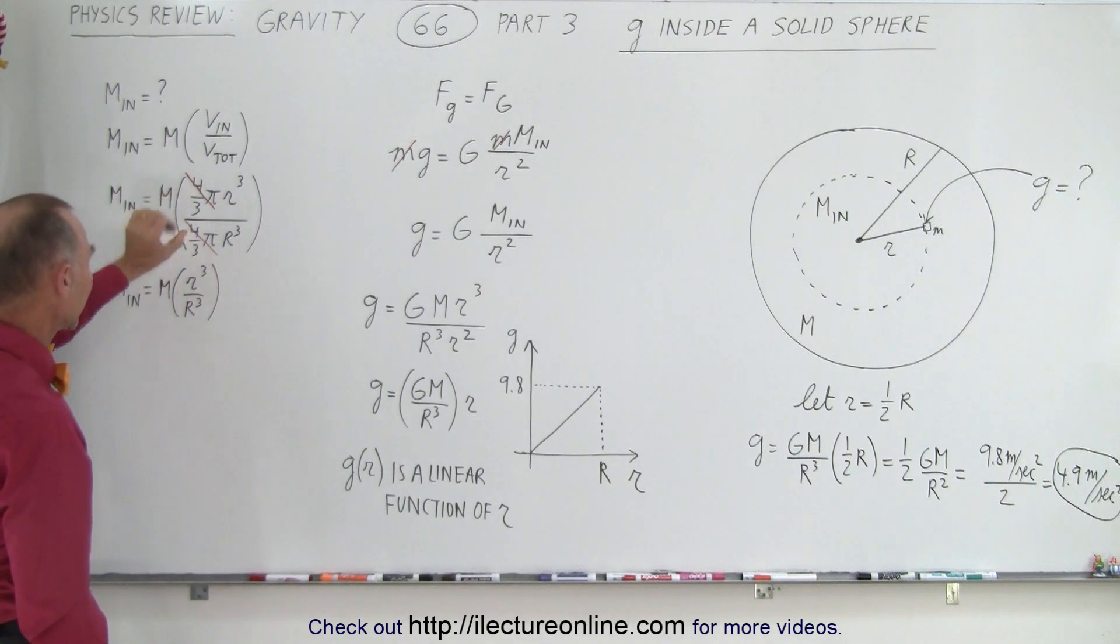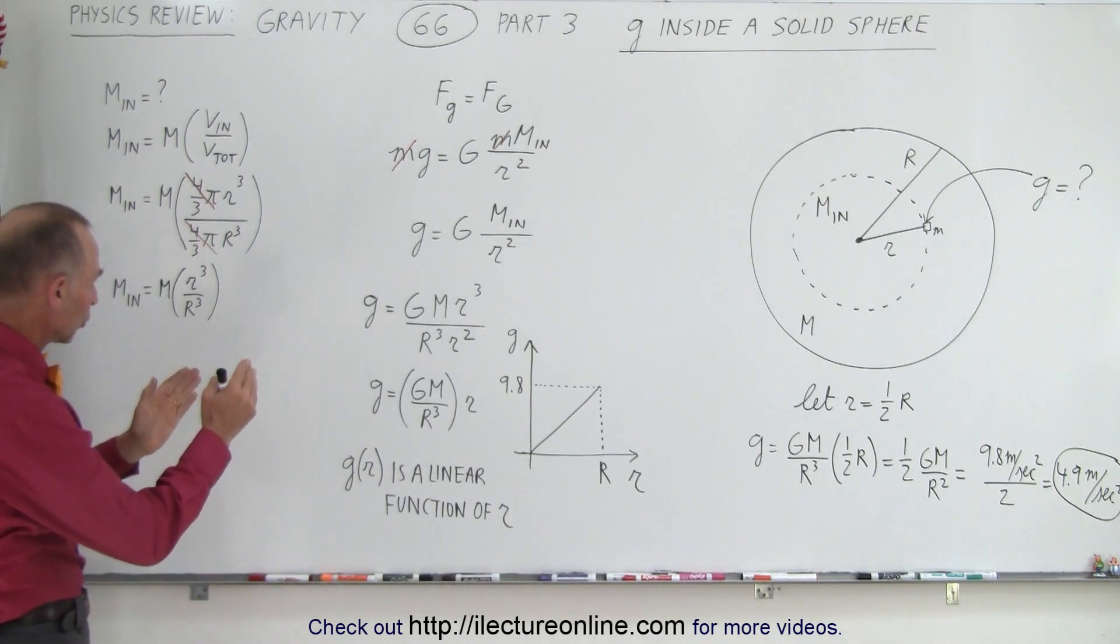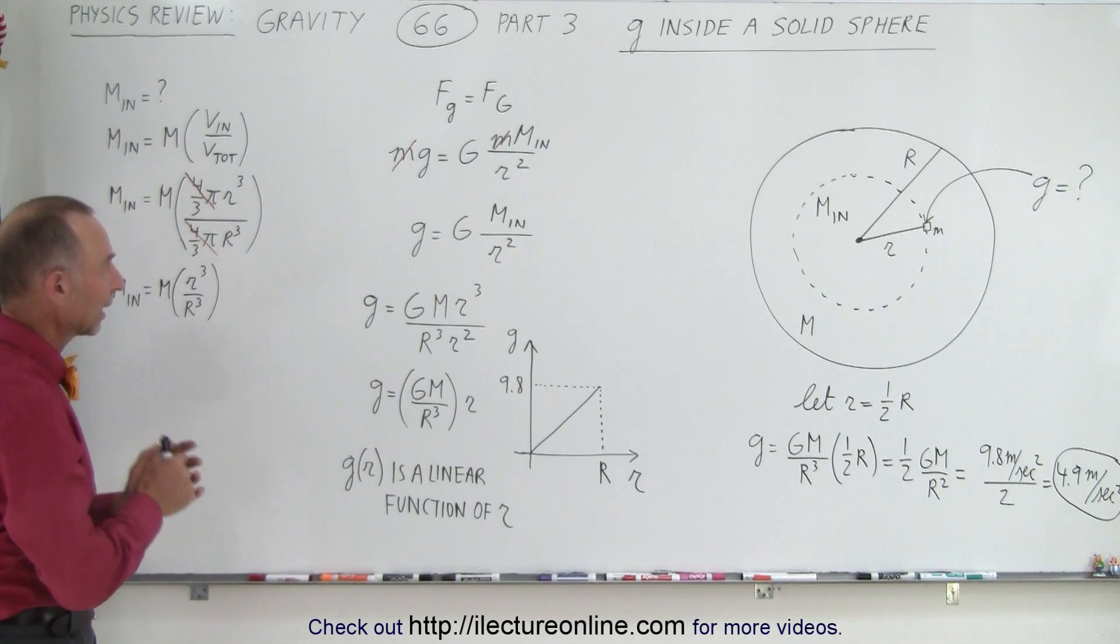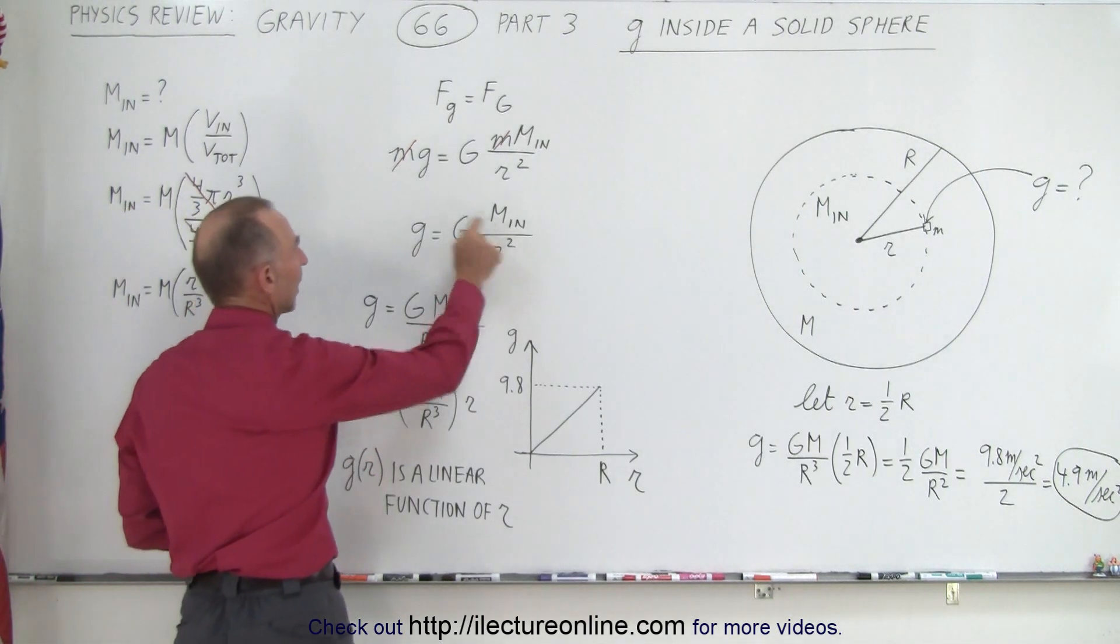And we're left with the mass inside is equal to the total mass times the ratio of little r cubed to big R cubed. And that is what we're going to use for the mass inside.